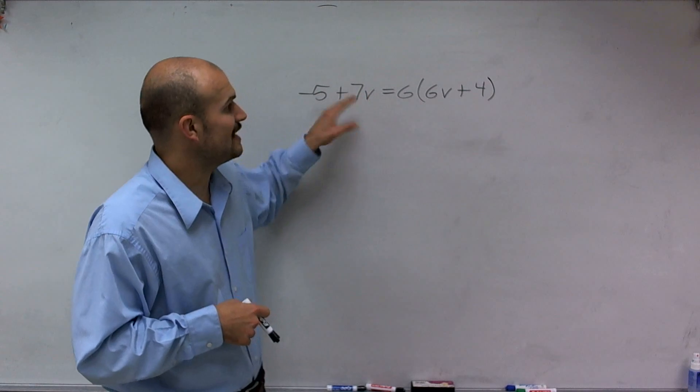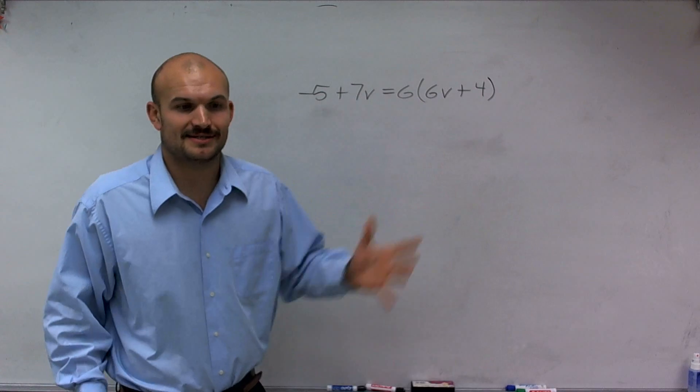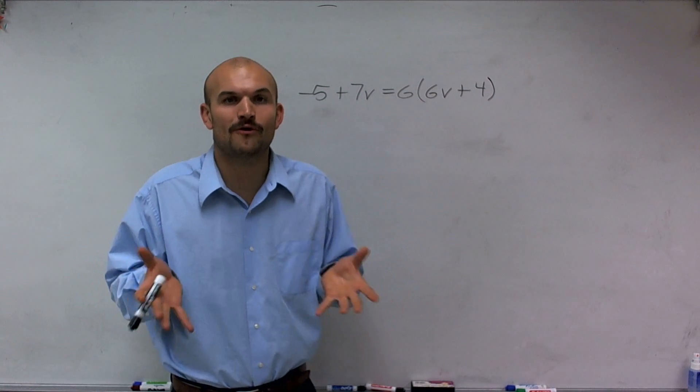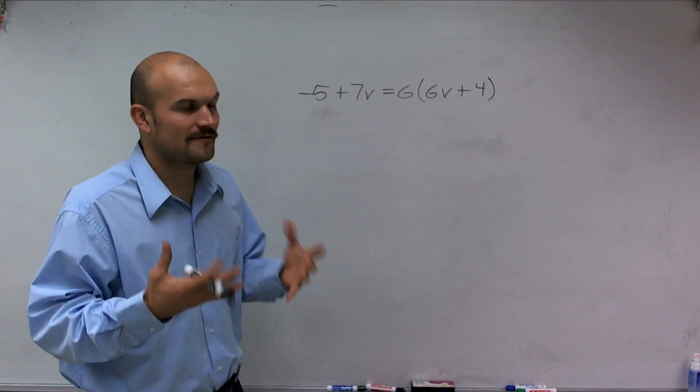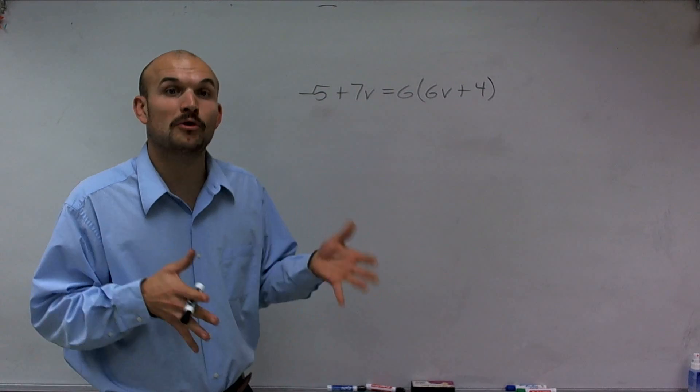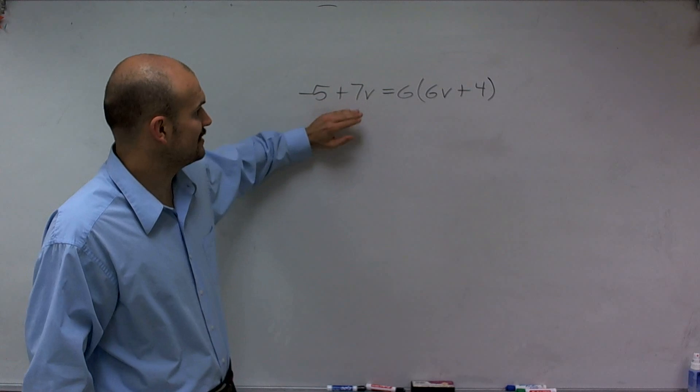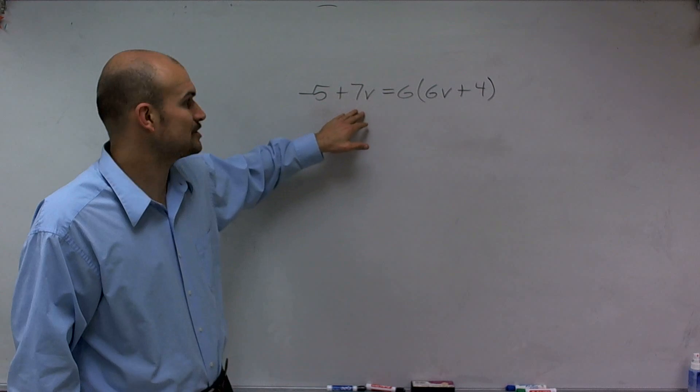What I notice is I have a v on the left side and also a v on the right side. So it's impossible to isolate one variable when you have two variables on two separate sides of the equation. So the first thing I need to do is simplify both sides. I look at my left side, and this is a simplified expression. I cannot combine like terms.